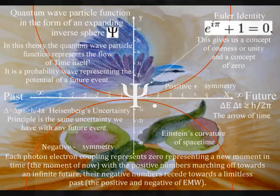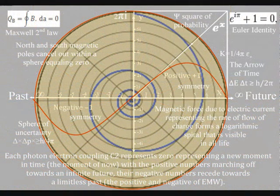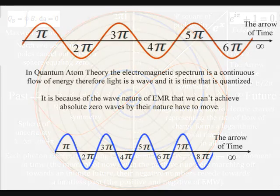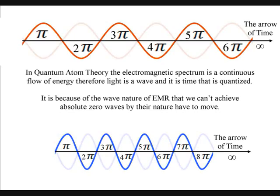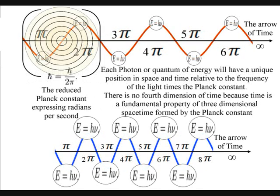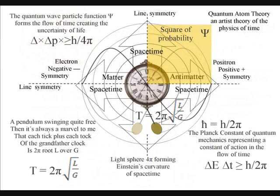This has gauge symmetry, and we can re-gauge each new photon at zero, representing a new moment in time — the moment of now — with the positive numbers marching off towards an infinite future, their negative numbers receding towards the limitless past; the positive and negative of electromagnetic waves.